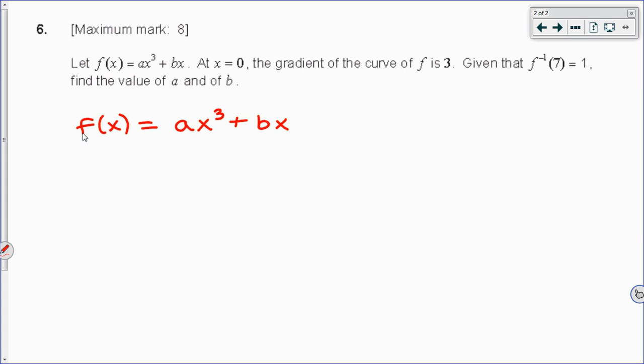First piece of information given: at x equals 0, the gradient of the curve of f is 3. Gradients of curves should remind you of derivatives. If you're ever reading on an IB exam question gradient of a curve or gradient of the function, you should not be thinking of m, the slope, or rise over run. You should be thinking of derivatives first. Gradient of a curve that's not linear, we're talking about derivatives here.